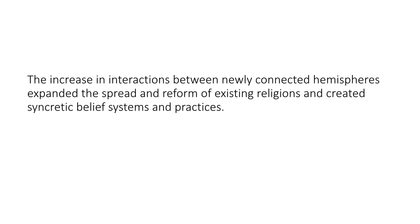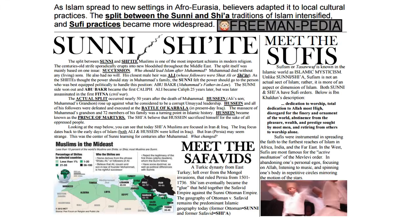The increase in interactions between newly connected hemispheres expanded the spread and reform of existing religions, creating syncretic belief systems and practices - those blended belief systems. For Islam spreading to new settings in Afro-Eurasia, believers adapted it to local cultural practices. The split between Sunni and Shia traditions intensified, and Sufi practices became more widespread. Sufism is Islamic mysticism that takes certain local beliefs and blends them with Islam.